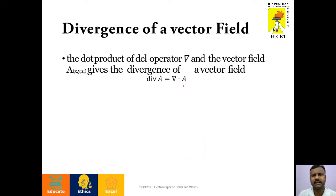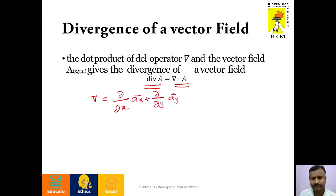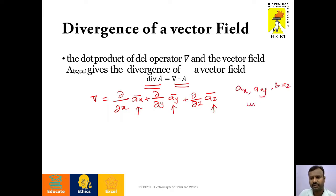Mathematically, the divergence can be obtained by multiplying the del operator with the vector. Considering we have vector field A, the divergence of that vector field A can be obtained by multiplying the del operator with this vector field. We know that del is the vector differential operator which is ∂/∂x â_x + ∂/∂y â_y + ∂/∂z â_z. This is the del operator in Cartesian coordinate system where â_x, â_y, and â_z are unit vectors along x, y, and z directions.